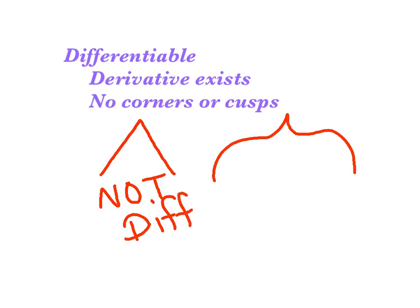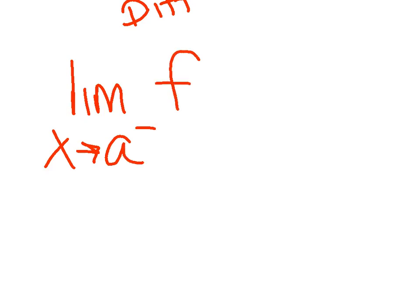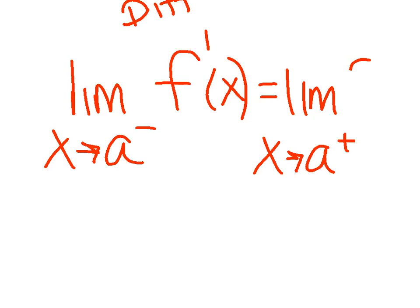Now notation-wise, we have to be clear on notation. This has been a popular theme on the past couple exams, understanding the notation of differentiable. It's very similar to that of continuous, or a limit exists basically. I would say the limit as x approaches a from the left, this time not of f(x), but of f'(x), has to equal the limit as x approaches a from the right of f'(x).